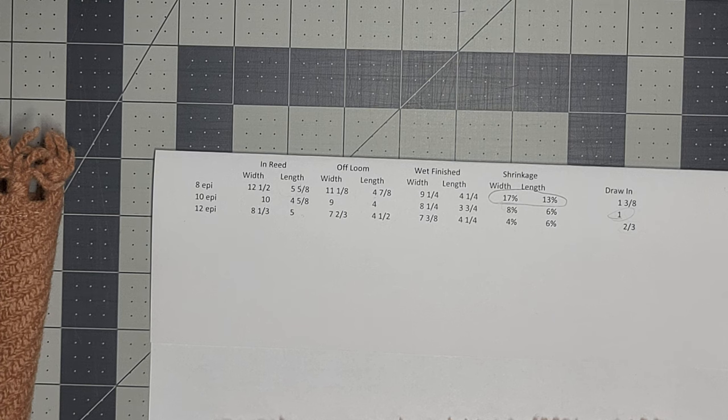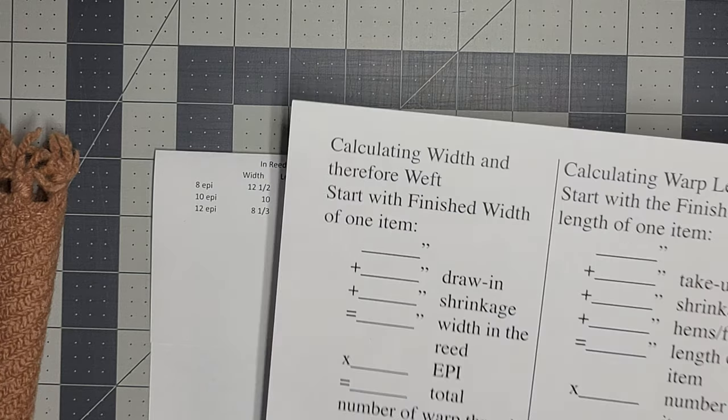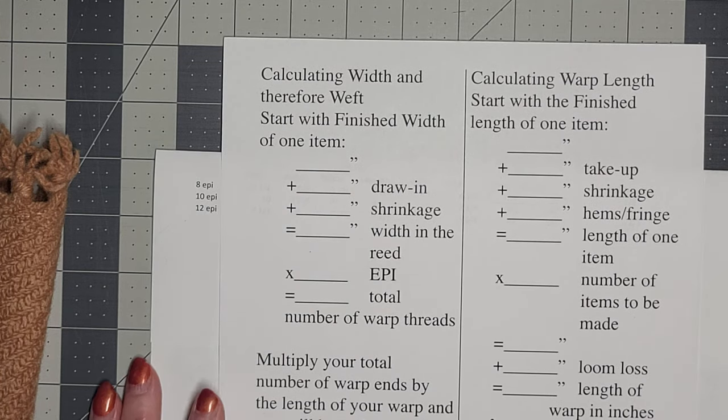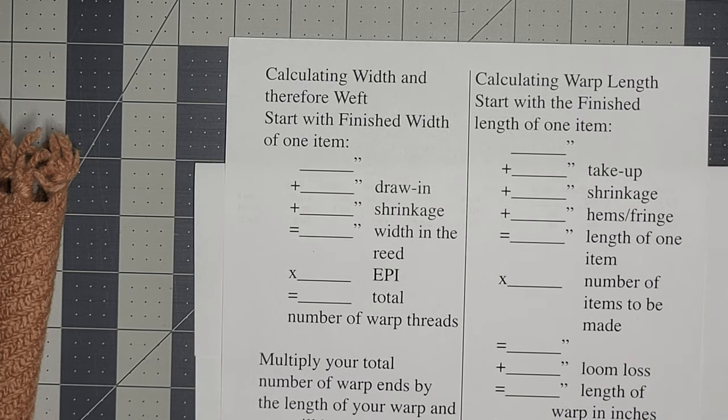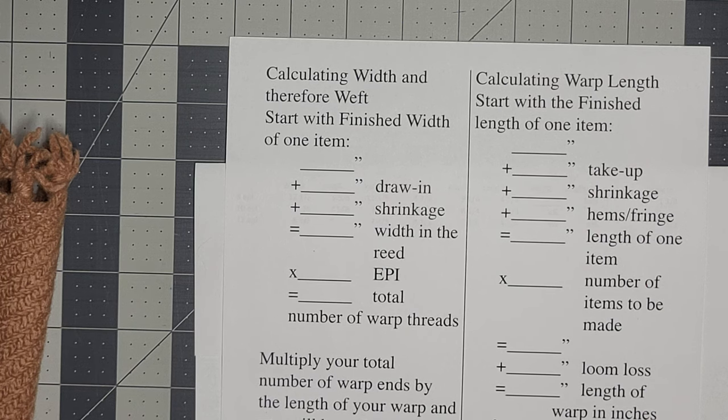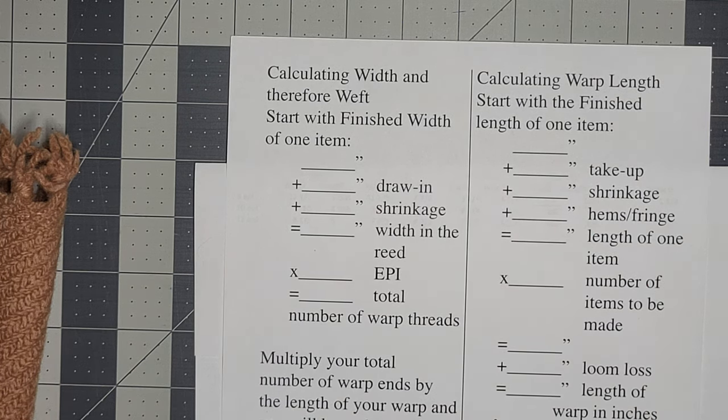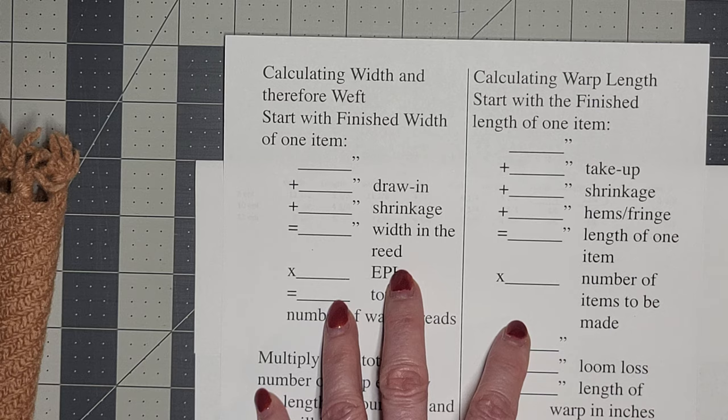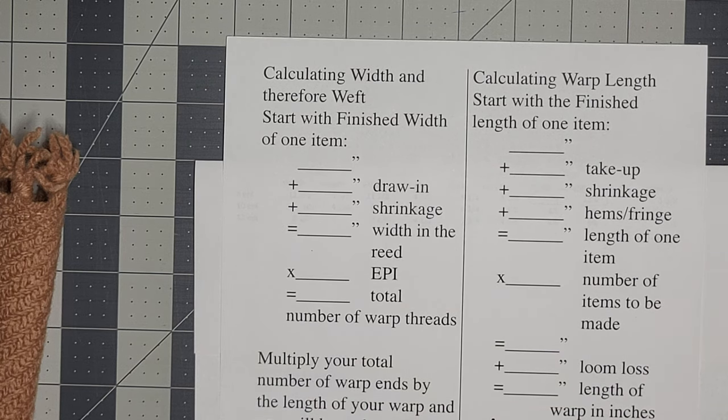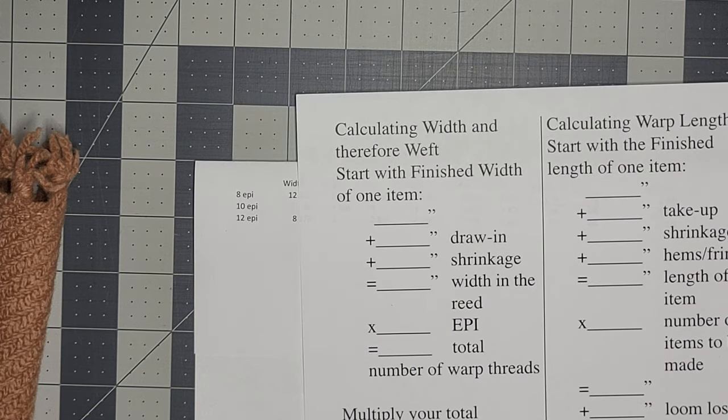So now we need to calculate how much warp and weft I need. So there are a number of different calculators out there. You can go online and use the, I believe it's called the Mother of All Yarn Calculators and it is by Margaret Co. She's got this online and it's great, you can plug it in. This is the one off of the Jane Stafford website and it's just basic hand calculations so we'll go ahead and do that.